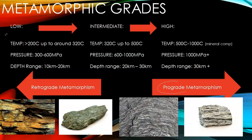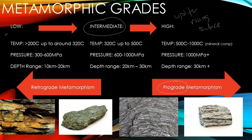Going from low to intermediate to high is an example of prograde metamorphism. Prograde is the forward momentum, forward transition from low to intermediate to high. If we're going backwards — if a rock that starts at intermediate experiences some sort of uplift or rising toward the surface — then you might have retrograde metamorphism, which is kind of like going backwards, as opposed to the normal progression. This would be the addition of fluids toward the surface or at shallow depths plus a lower temperature to change the rock.